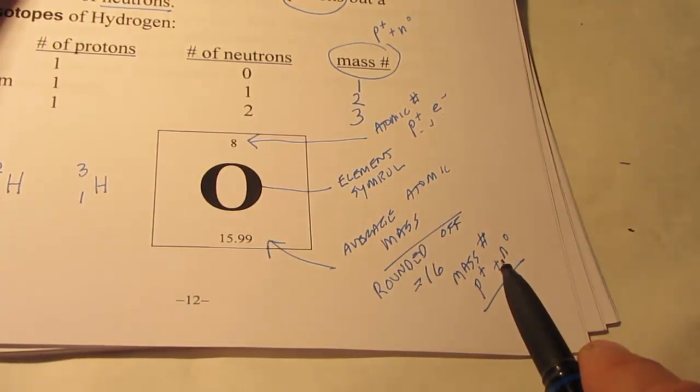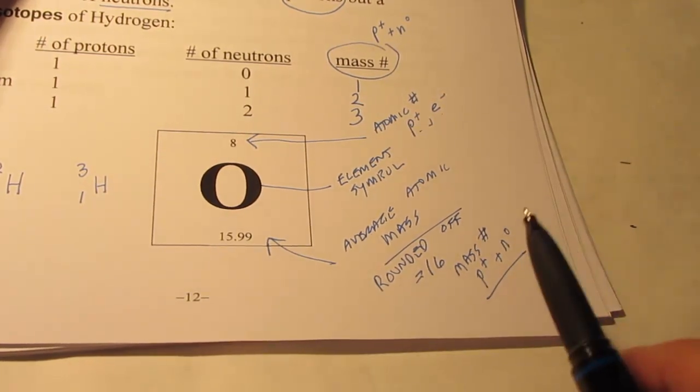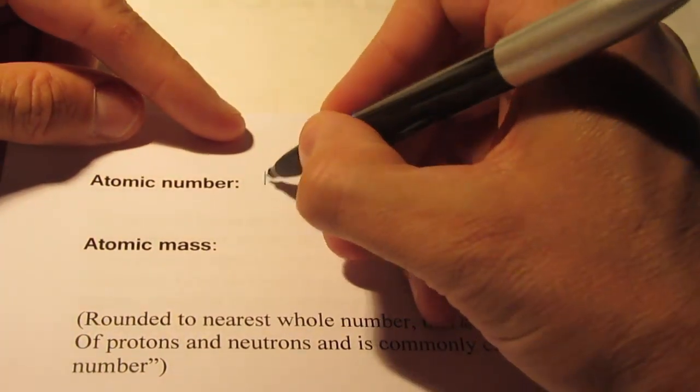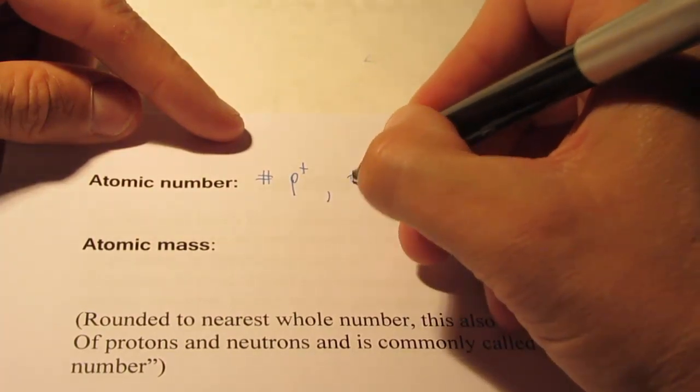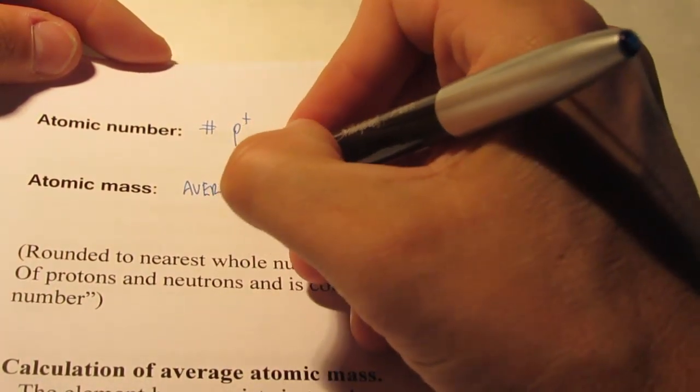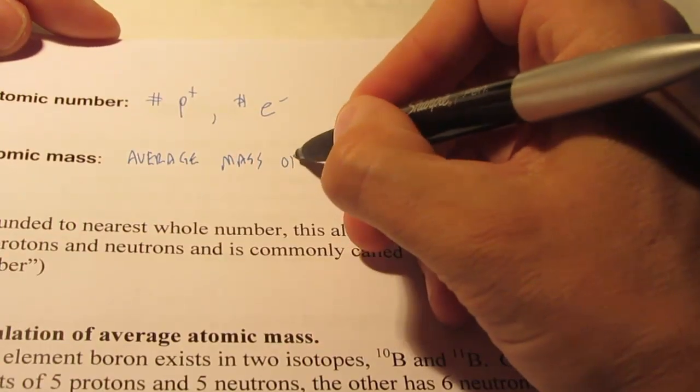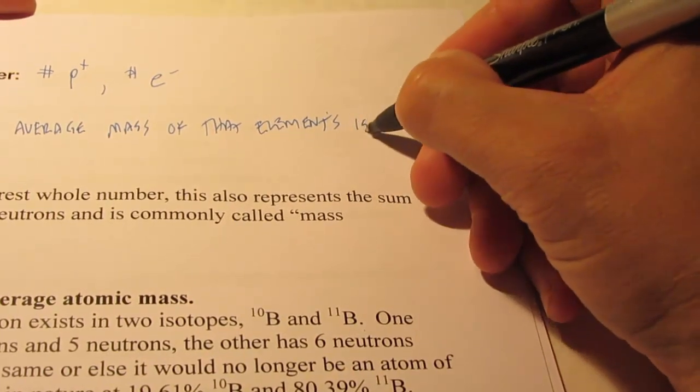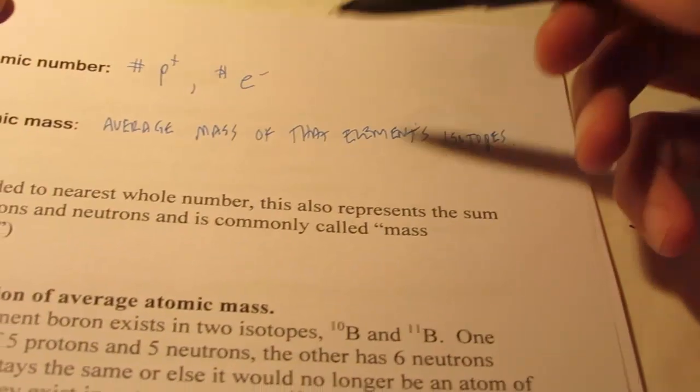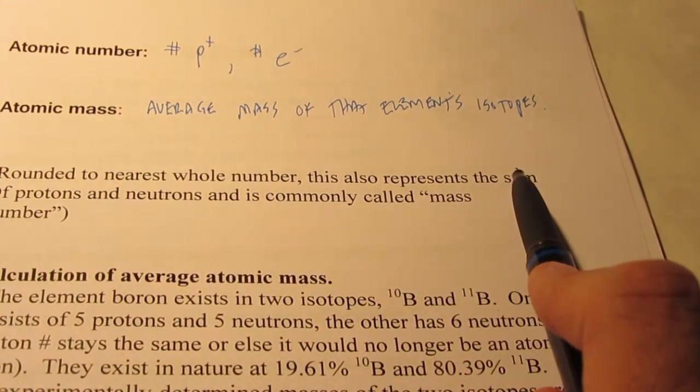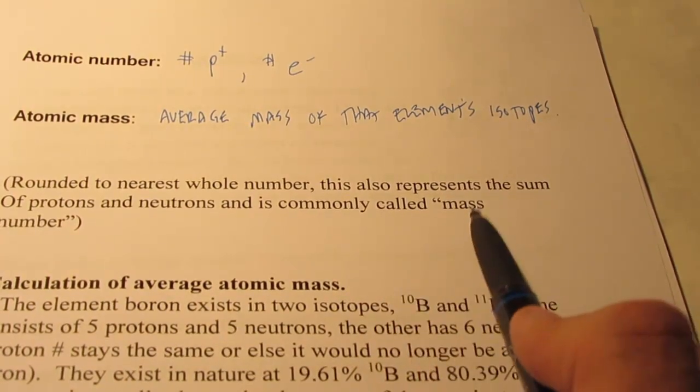Just as a quick recap, recall that the atomic number is the number of protons and the number of electrons in a neutral atom. The atomic mass is the average mass of that element's isotopes. If we round this atomic mass off to the nearest whole number, that also represents the sum of the protons and neutrons, and is commonly called the mass number.